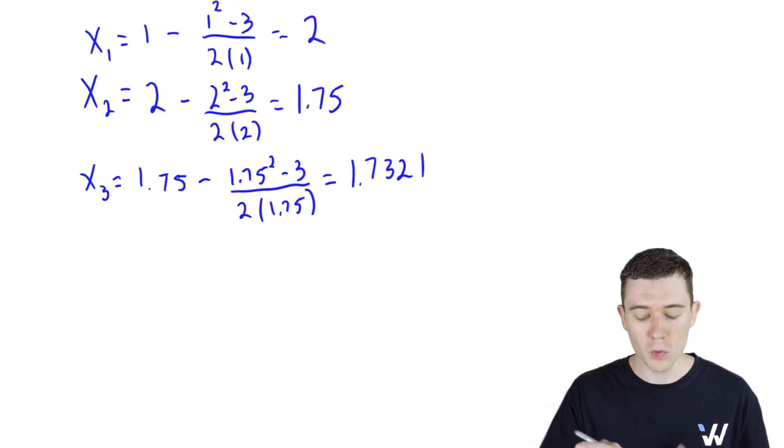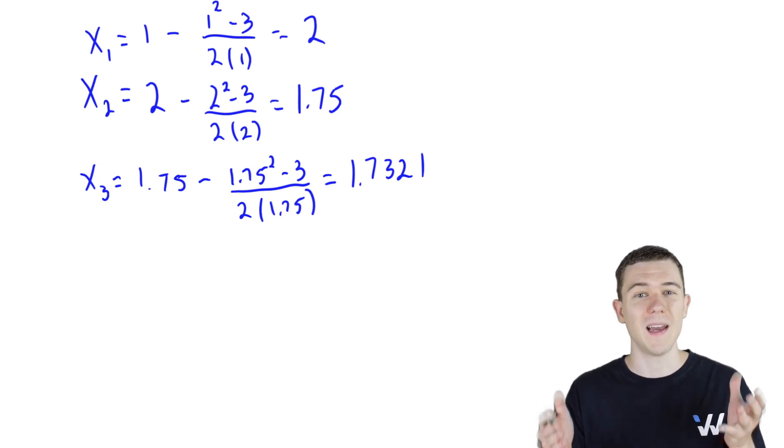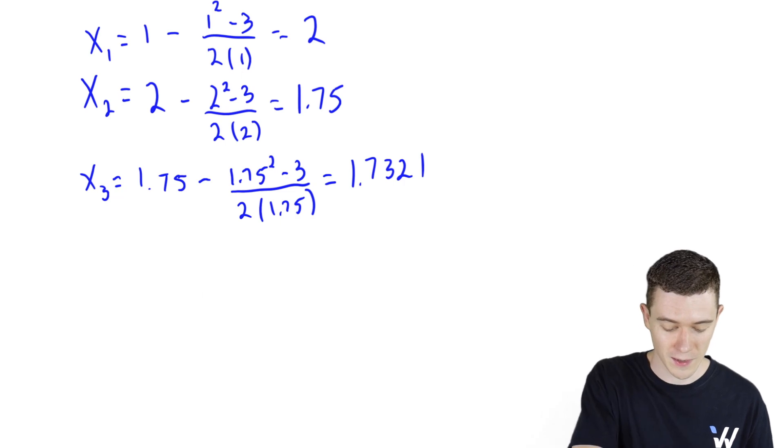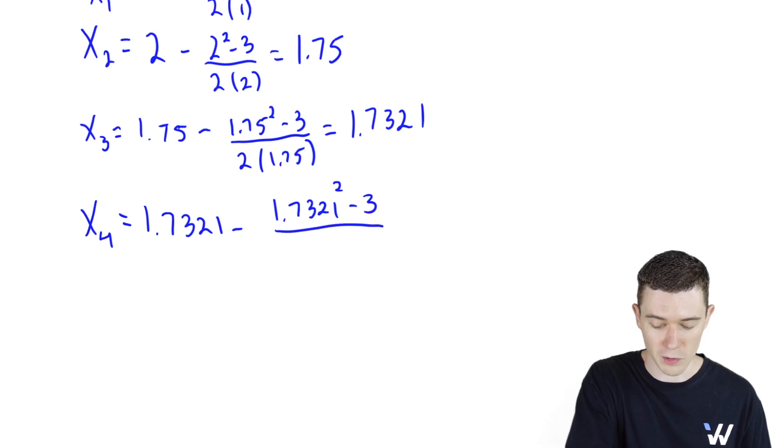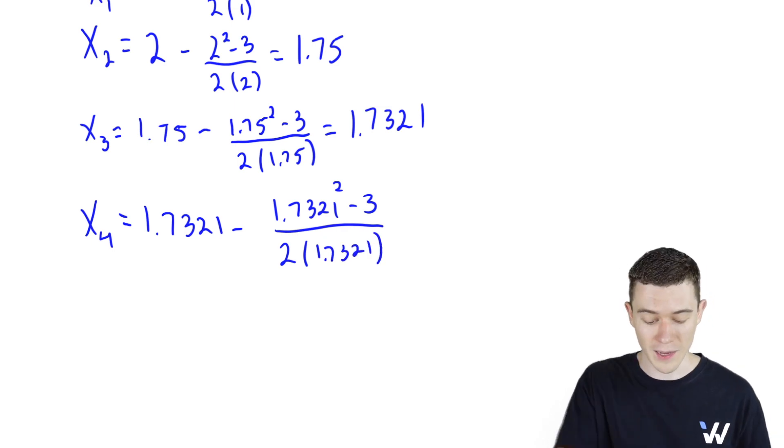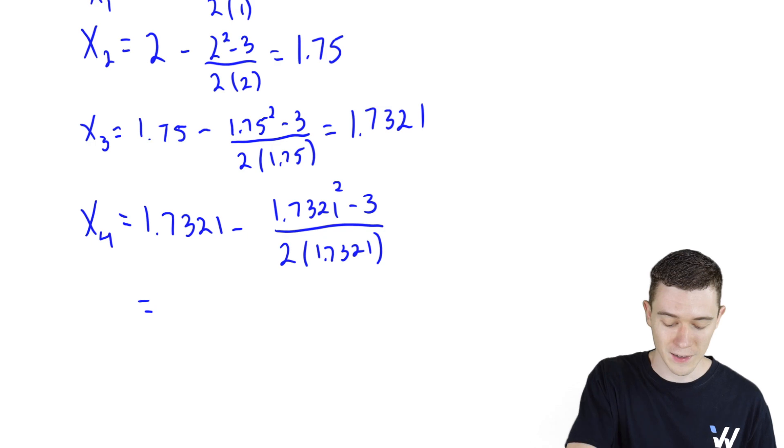Let's check one more time, because maybe if we went again, maybe these last four decimal places might change a little bit. If they stay the same, that's going to be our best estimate. x sub four, we do it again. This time it's x sub three, the one point seven three two one minus one point seven three two one squared minus three. That's our function evaluated at x sub three over two times one point seven three two one. That's our derivative evaluated there. And if you plug that in, guess what you get? The exact same thing.